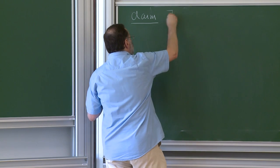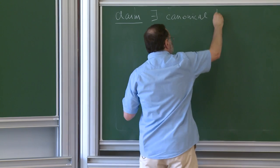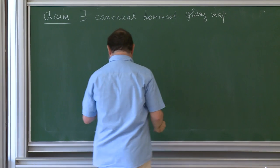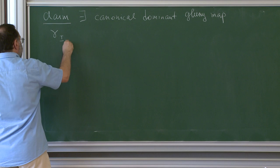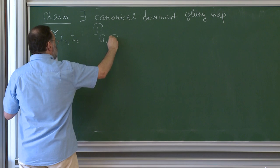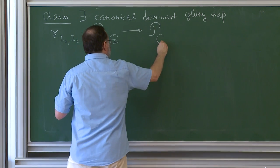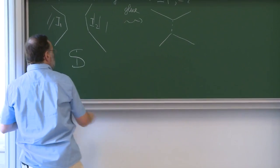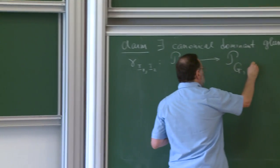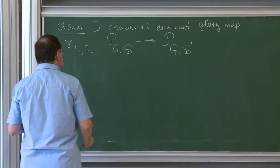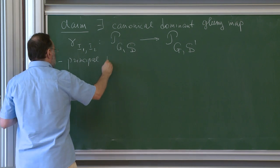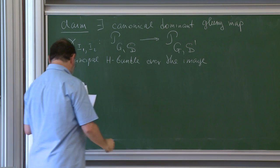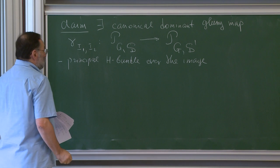Claim: there exists a canonical dominant (Zariski onto) gluing map gamma, related to the gluing of two boundary intervals, which takes the moduli space of the original surface S to the moduli space PGS' of the glued surface S'. It is a principal H-bundle over its image. The map is dominant but only Zariski onto.